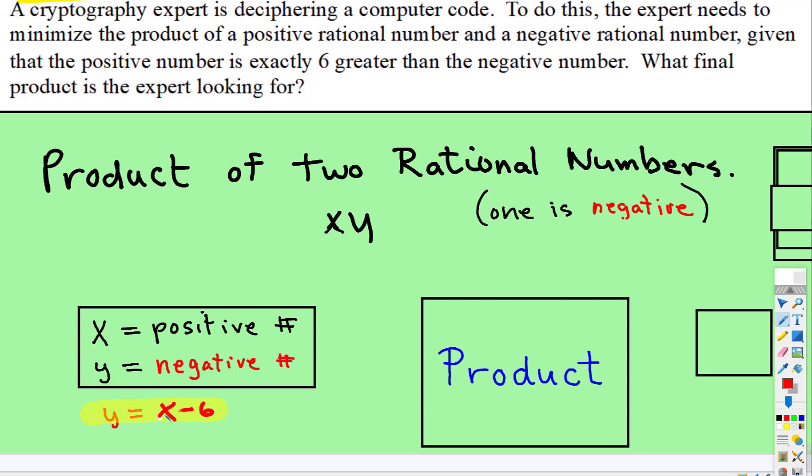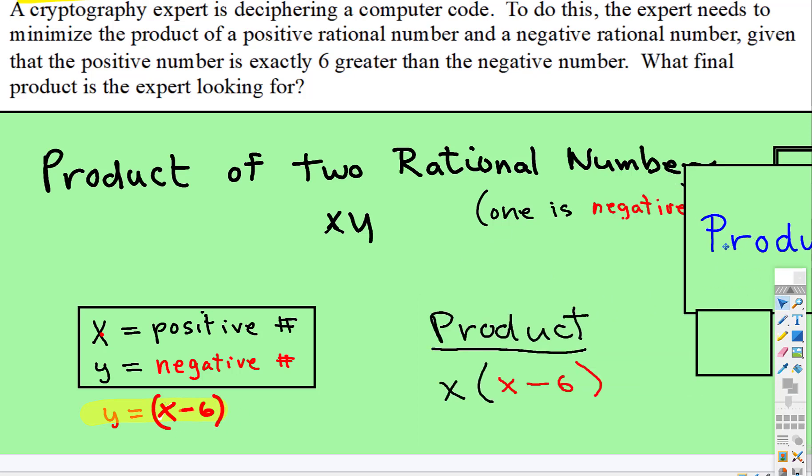That makes sense. And then the product becomes x times y. Well, instead of y, we'll substitute this, so that will be the product. When we multiply that out, we get x² - 6x. Remember, this is P, and then we're going to minimize P, meaning we're going to take the derivative of this.